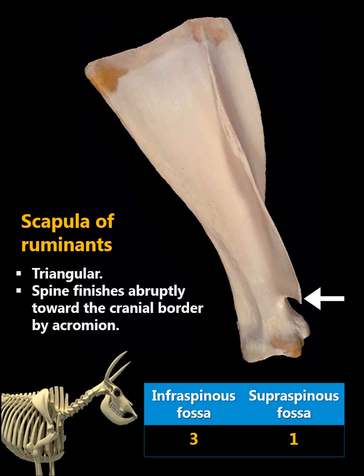Meanwhile, in large ruminants like ox, or small ruminants like sheep and goat, the scapula is typically triangular in shape. The size of the infra-spinous fossa is three times that of the supra-spinous fossa. The spine finishes towards the cranial border abruptly by the acromion process.